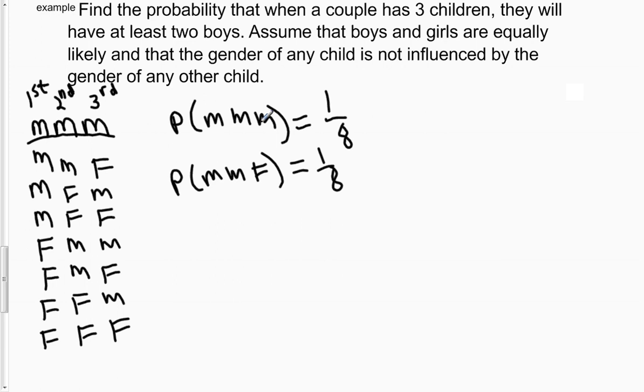So let's take a look at the probability when a couple is having three children, that they will have at least two boys. That's the probability that we're looking for. We're looking for the probability of this couple having at least two boys. Okay, at least two boys.